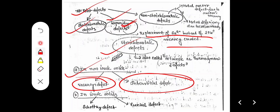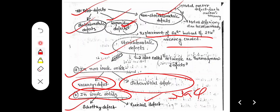Non-stoichiometric defect includes metal excess defect due to anionic vacancy, and metal deficiency defect due to cationic vacancy. In ionic solids, for example in a NaCl-type structure, both Schottky defect and Frenkel defect can be seen — two types of defects.